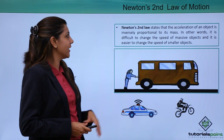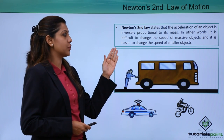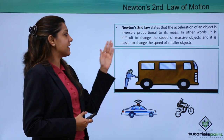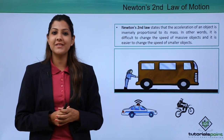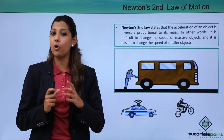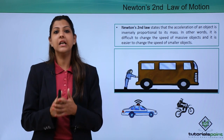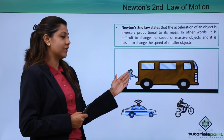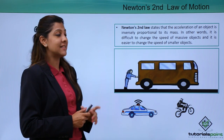Newton's second law states that the acceleration of an object is inversely proportional to its mass. In other words, it is difficult to change the speed of massive objects and easier to change the speed of smaller objects. For example, pushing something small requires little force, but pushing something heavy like a truck or bus requires a lot of force — just like a person trying to push a big bus, which is nearly impossible.